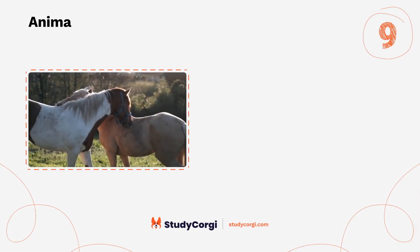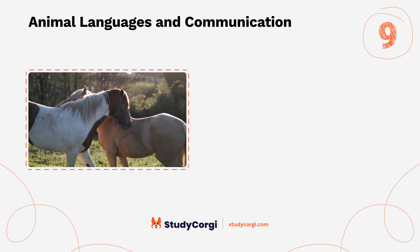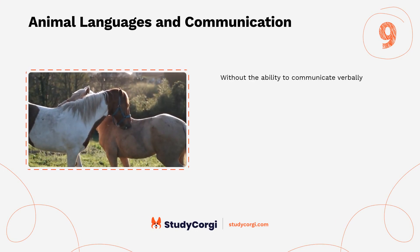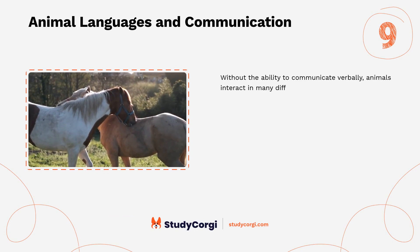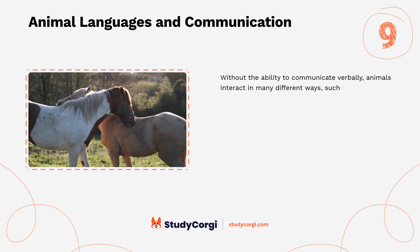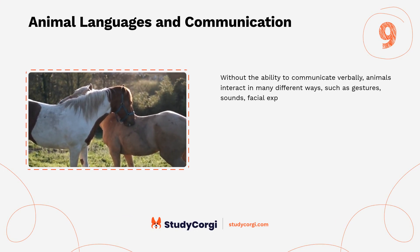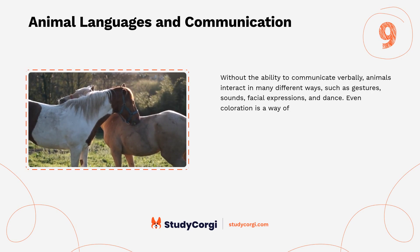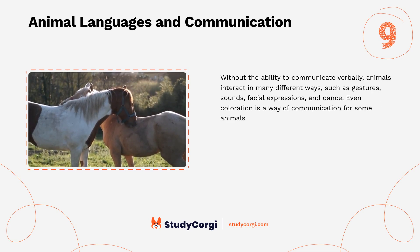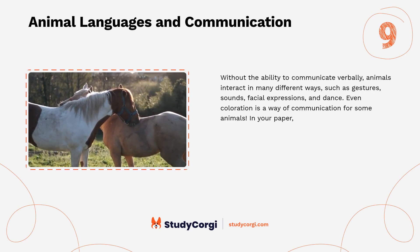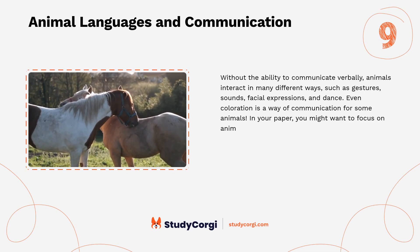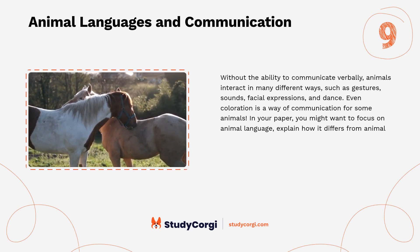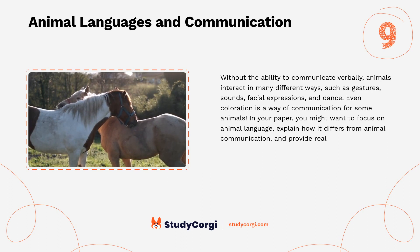Animal Languages and Communication. Without the ability to communicate verbally, animals interact in many different ways, such as gestures, sounds, facial expressions, and dance. Even coloration is a way of communication for some animals. In your paper, you might want to focus on animal language, explain how it differs from animal communication, and provide real-life examples.